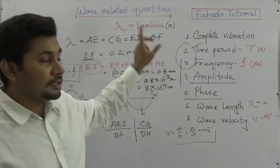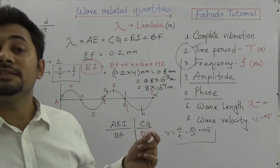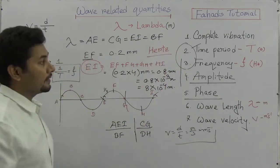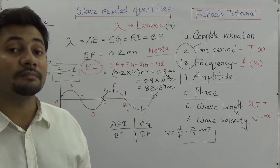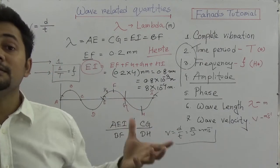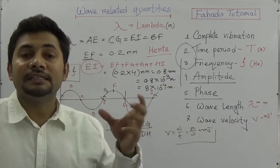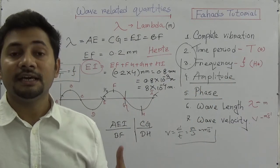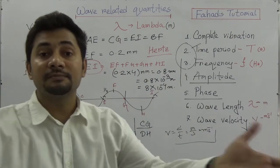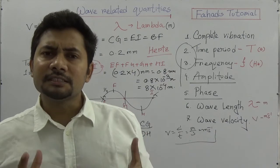So to recap: complete vibration — wave transmitting particles return to the same point. Time period T in seconds. Frequency f in hertz or per second. Amplitude — the longest distance of a wave transmitting particle from the equilibrium state. Phase — the instantaneous condition of a wave transmitting particle in a wave. Wavelength lambda — distance between two similar phases. Wave velocity — distance traveled per second, unit is meter per second. I'm coming up with the next tutorial on the relation v = fλ and mathematical problems.